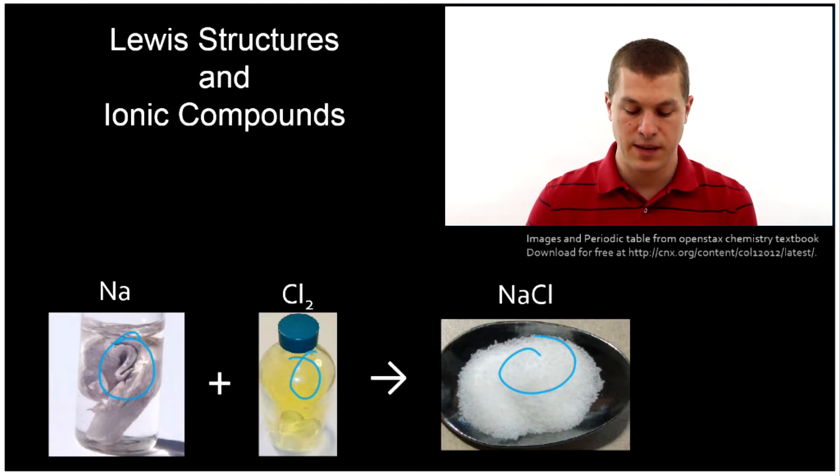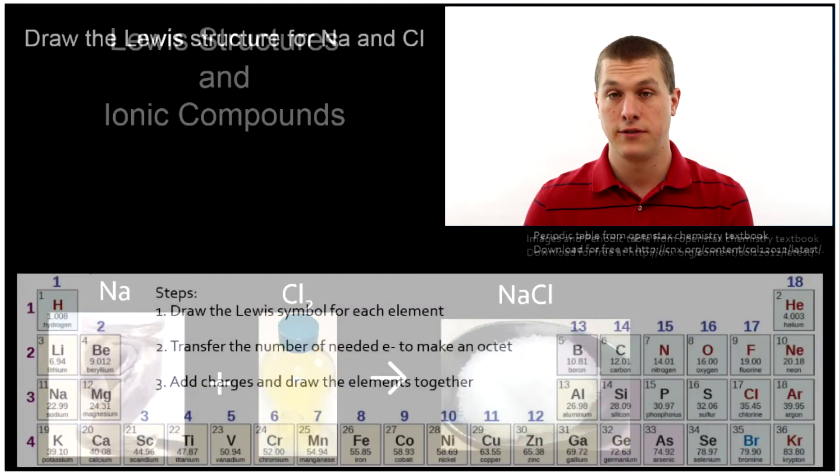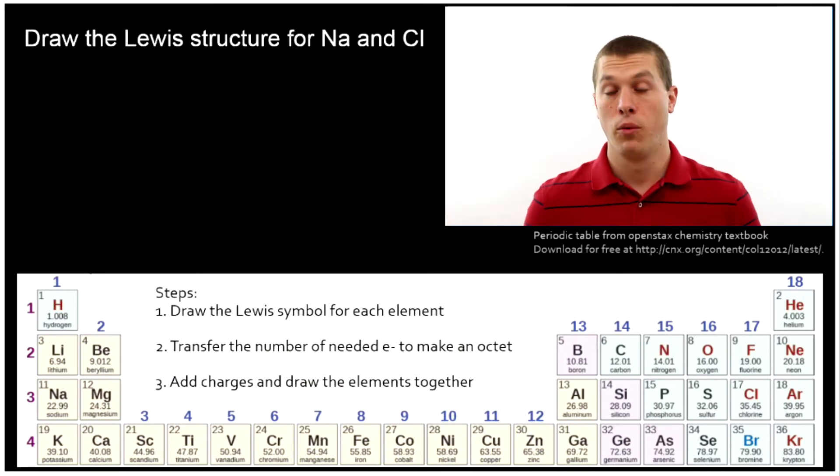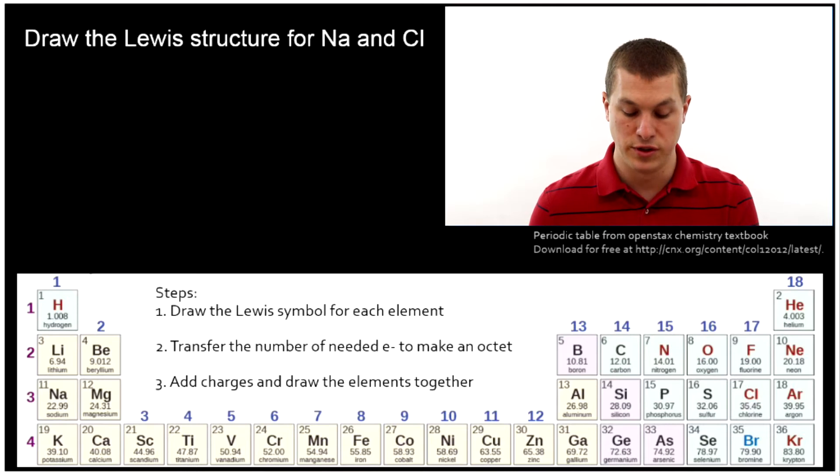Let's go ahead and go through a few examples where we draw the Lewis structures for different ionic compounds. We'll see that we can predict what ratios they'll combine in, and also understand better why they're stable. So first, we want sodium and chloride. The very first step is we're going to draw the Lewis symbol for each element.